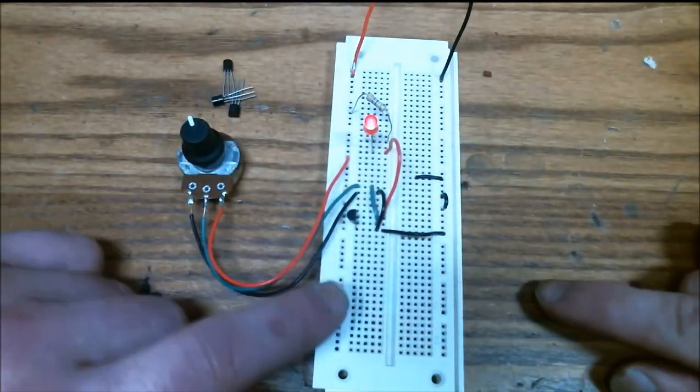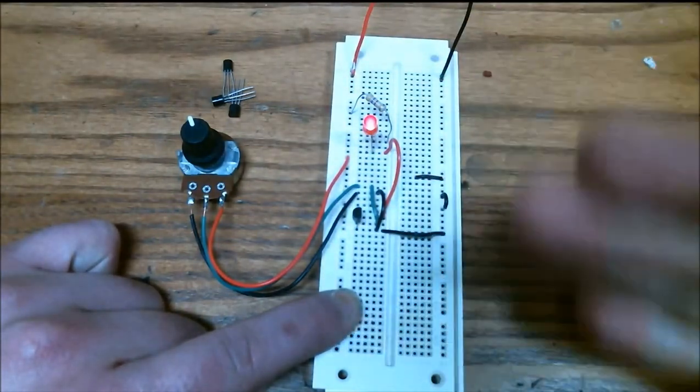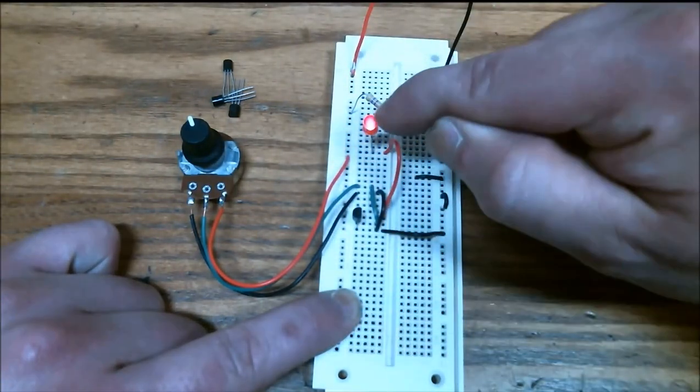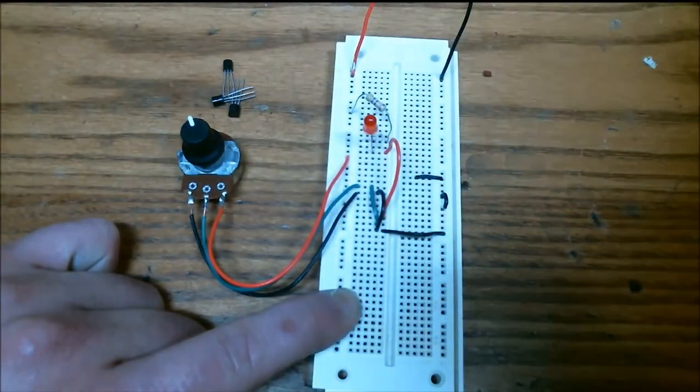So that is an NPN, because an NPN requires some voltage at the base, something around 0.6 volts, in order to turn on the LED at the collector. So that's an NPN, so I'm going to put that in the NPN bin.